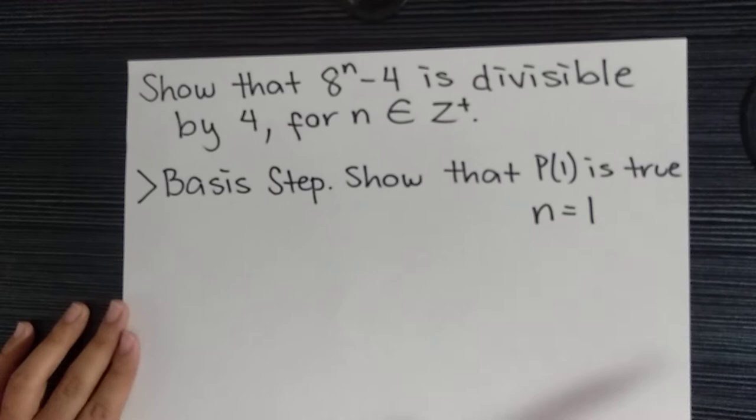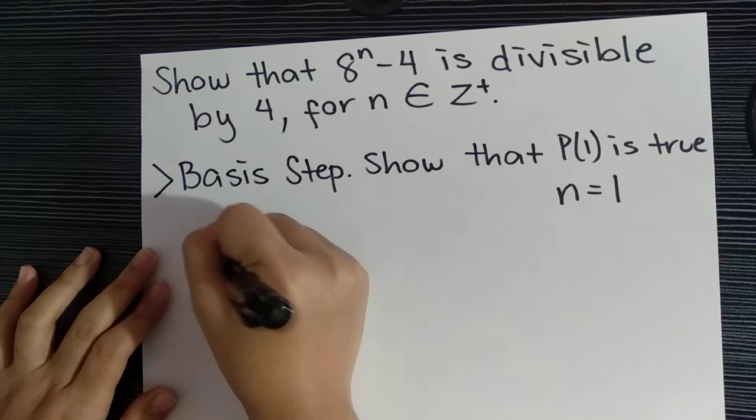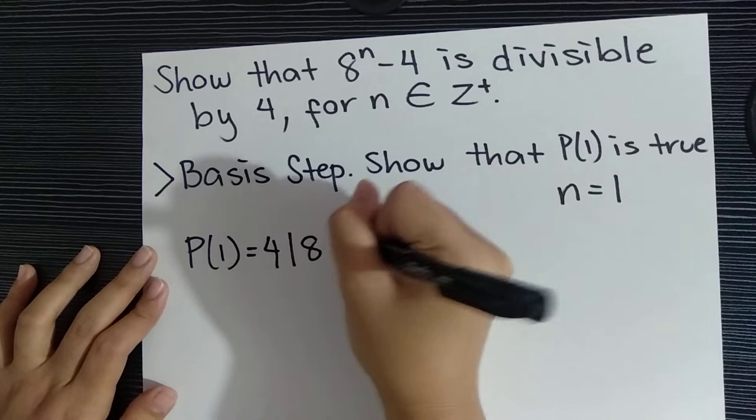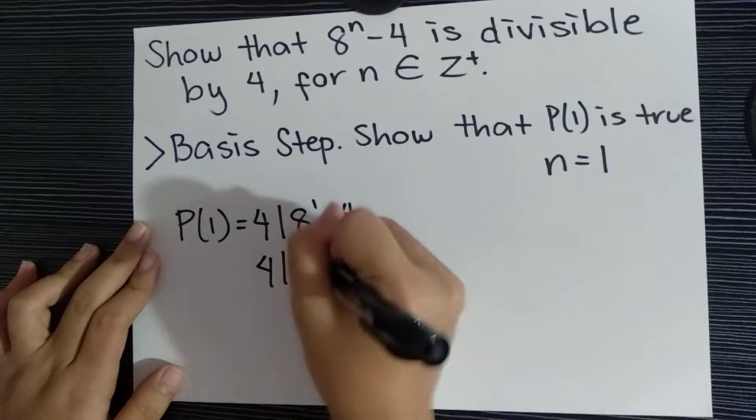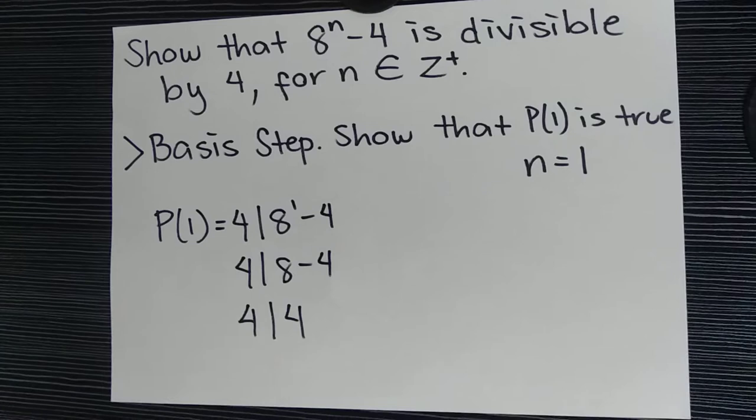First, we will use the basis step. Show that P(1) is true. To do that, we let n = 1. So P(1) = 4 | 8^1 - 4, which equals 4 | 8 - 4, so 4 | 4. We can conclude that the statement is true.